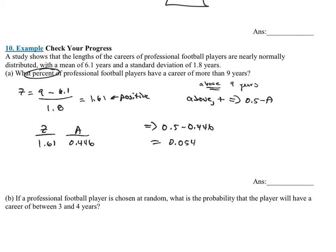But it wants the percentage. Because it wants a percentage, I'm going to multiply it times 100 or move the decimal to the right 2. I'm getting 5.4%. So only 5.4% of NFL players can actually play longer than 9 years.